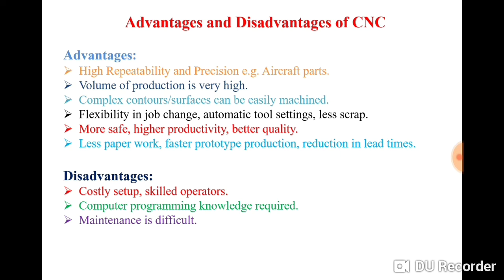The next advantage is flexibility in job change. You can easily change your cutting tool, easily mount or clamp the workpiece on the table, or hold it with a hydraulic chuck. Then there is automatic tool setting: CNC machines have a tool magazine where you can store a number of cutting tools, and a robotic arm picks the tool from the magazine and places it in the spindle, or picks it from the spindle and returns it to the magazine.